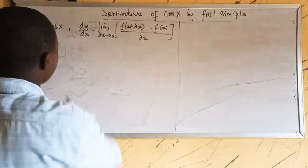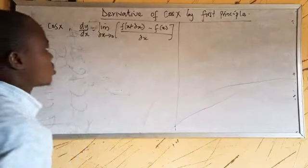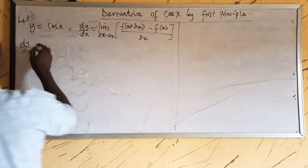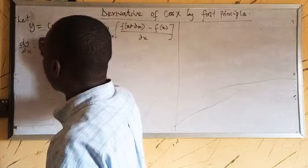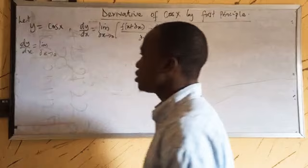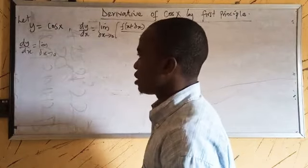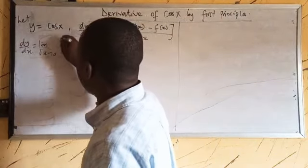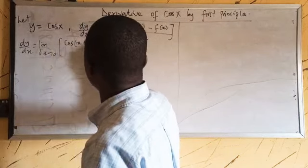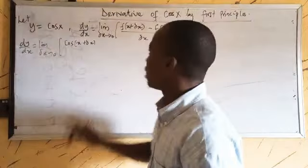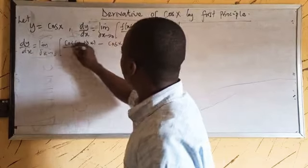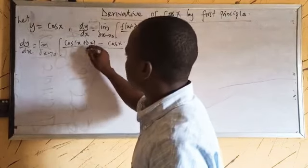We are now asked to find the derivative of cos x, so our y is cos x. Therefore dy/dx will be equal to the limit as Δx tends to zero of cos(x + Δx) minus cos x, all over Δx.